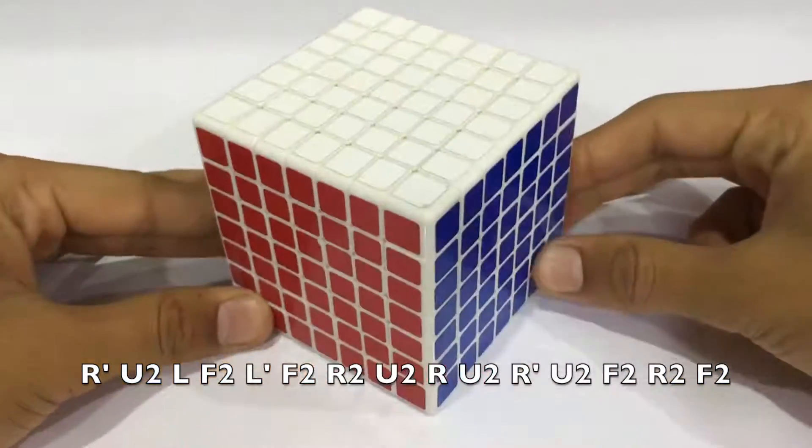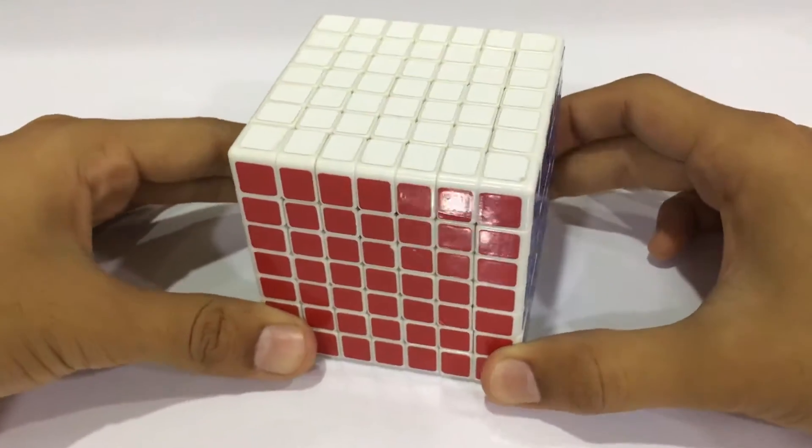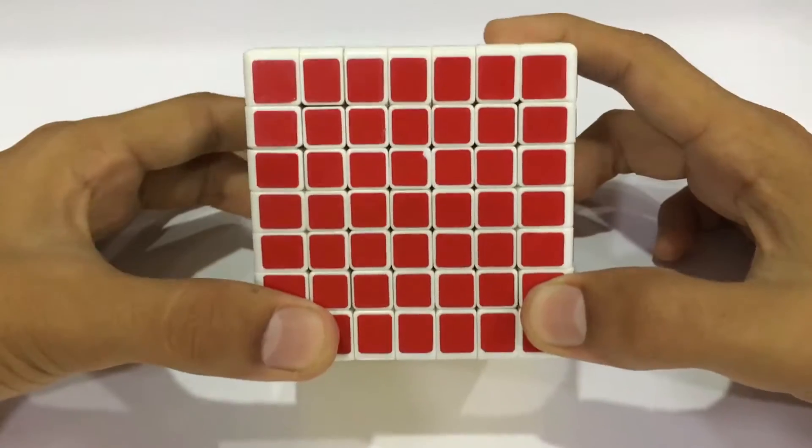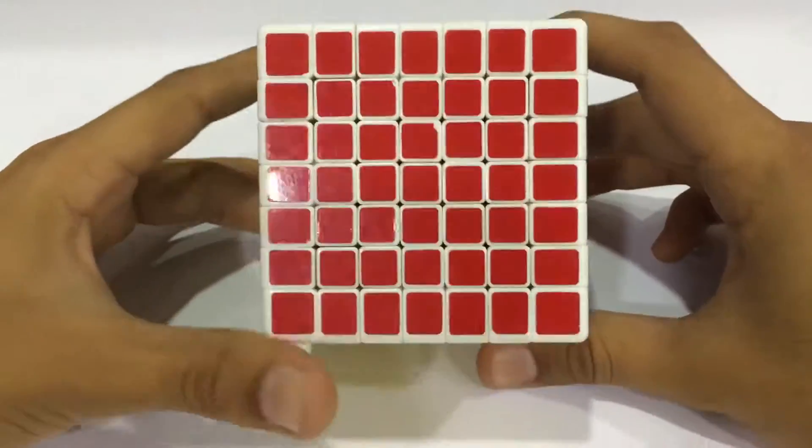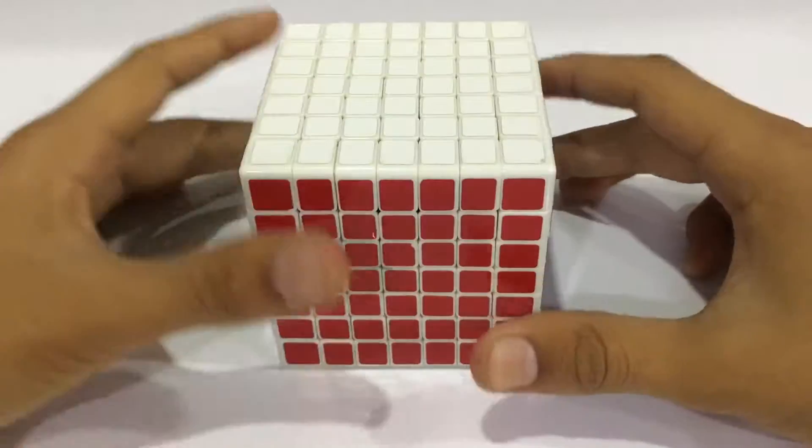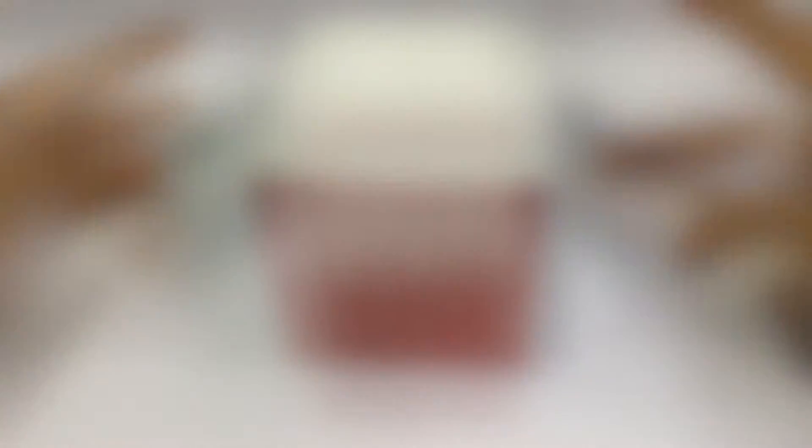So there you go. We have just solved the edge parity in a 7x7. This is very simple. There is another algorithm which is damn longer than this one. But if you have learned this algorithm, then you need not learn anything else and you can solve any cube in the world.